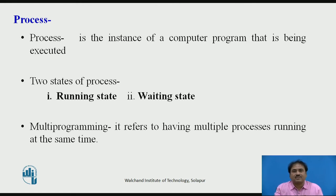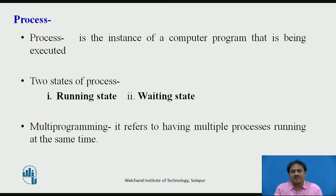Now what is a process? A process is an instance of a computer program being executed currently. Normally a process has got two states: the first is the running state and the second is the wait state. Now in the running state, the process is supplied to the CPU. It is acquiring all the required resources for execution and the process is executed by the CPU.